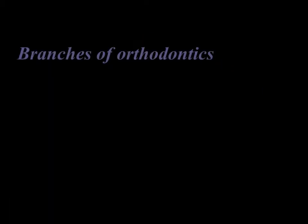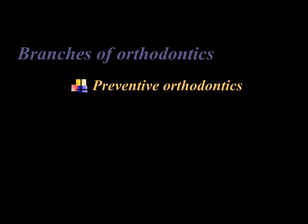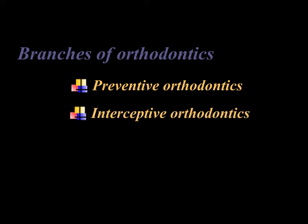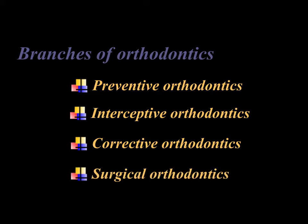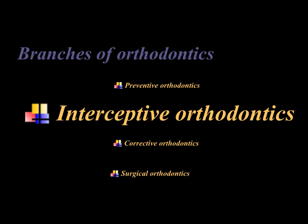Good morning everybody. As we know, there are four branches of orthodontics. Starting with preventive orthodontics, in which we try to prevent any malocclusion from setting in. Then we have interceptive orthodontics, wherein the malocclusion has set in but before it worsens we intercept at an early age. Third is corrective orthodontics where a full-blown malocclusion has already set in and we need full braces treatment. Fourth is surgical orthodontics, which deals with correction of jaw skeletal problems with surgery, generally done in non-growing adult individuals. Today's lecture is on interceptive orthodontics.